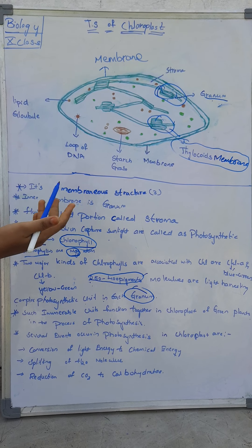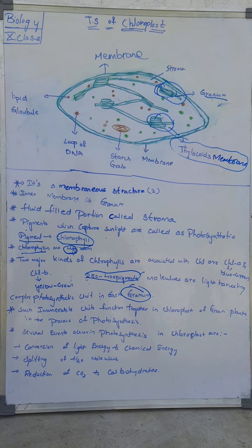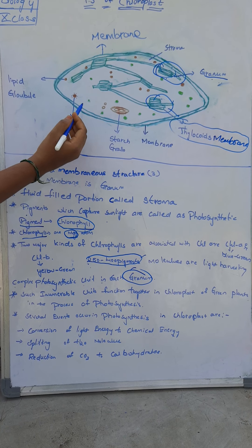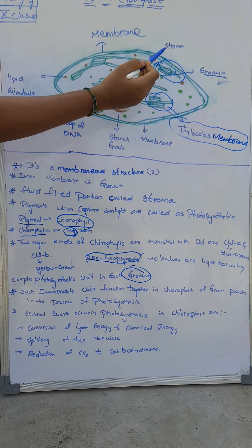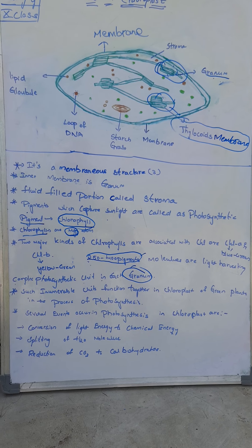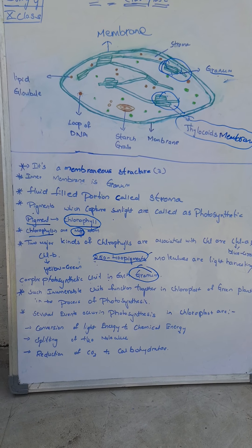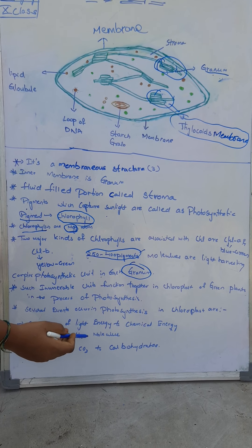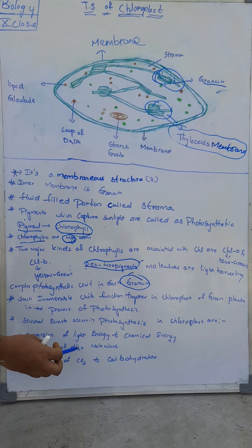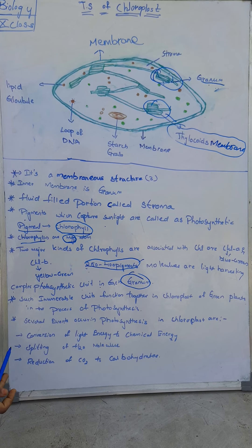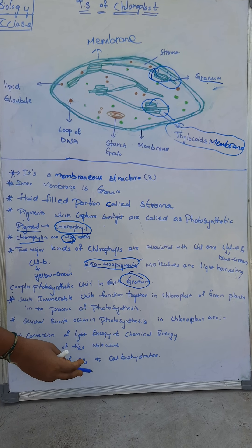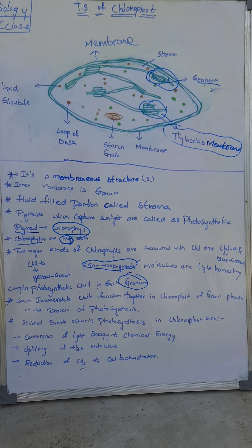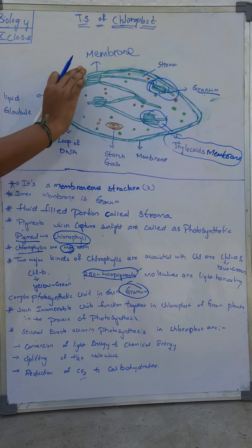I will explain the light reaction and dark reaction. Here is a brief explanation: first, conversion of light energy into chemical energy happens in the granum. Second, splitting of the H2O molecule into H⁺ ions, which happens in the light reaction. Third, reduction of CO2 to carbohydrates, which I will explain in the Calvin cycle.